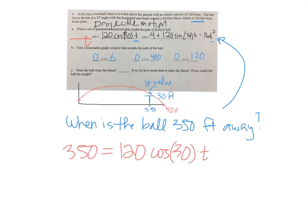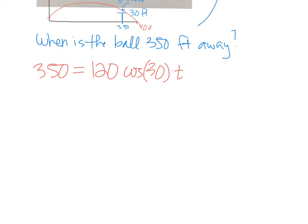If I divide both sides by 120 cosine of 30, that will tell me the time at which the ball is 350 feet away.